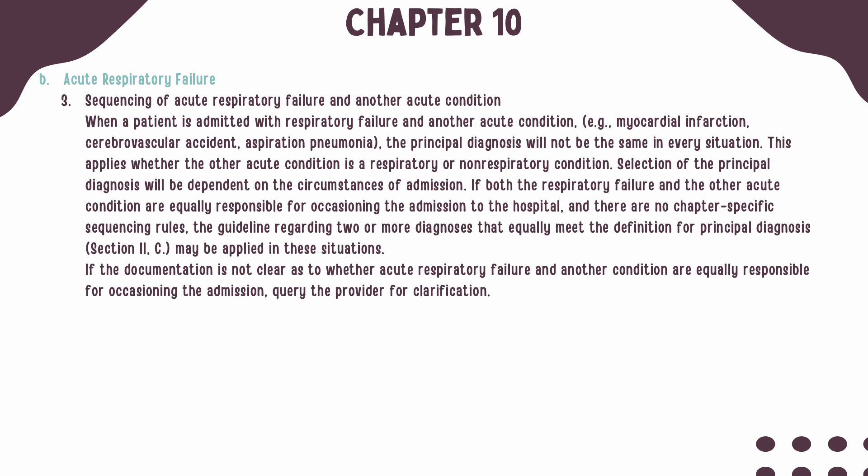As with all other conditions, the principal diagnosis will not be the same in every situation. If a patient is admitted with respiratory failure and another acute condition — such as an MI, CVA, or aspiration pneumonia — then the selection of the principal diagnosis will be dependent on the circumstances of the encounter. If both the respiratory failure and the other acute condition are equally responsible for the admission, and there are no other chapter-specific guidelines that clarify sequencing, the guideline for two or more diagnoses for principal diagnosis in Section 2 should be applied. If the documentation is not clear as to whether the condition is responsible for the admission, then you should query the provider.